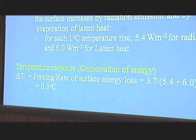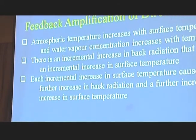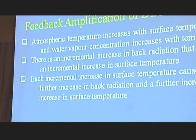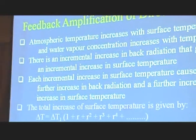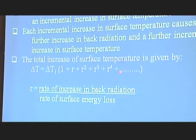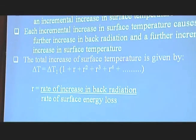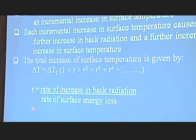The IPCC does talk about positive feedbacks, and this is true. Because the atmospheric temperature increases with surface temperature, and water vapor concentration in the atmosphere increases with temperature for a constant relative humidity. There's an incremental increase in the back radiation because of the water vapor and the increased temperature, and that increases the surface temperature a little bit more. Each time you go through this process it adds a little bit — it's like an infinite series. So we get the total increase of surface temperature given by this formula: DT1, which was the direct forcing, plus all of these little increments. Without any mathematical knowledge, one would say that looks almost like a runaway climate change. But we know from mathematics that as long as R is less than 1, we have a solution. R being the rate of increase of back radiation due to water vapor and temperature, as against the total energy loss of the surface — the infrared radiation and the latent heat.